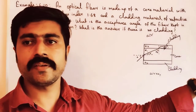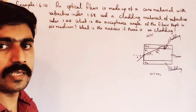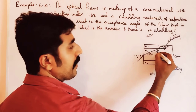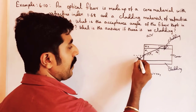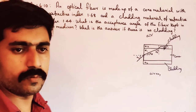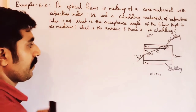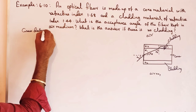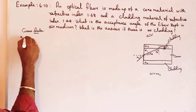The refracted ray grazes the surface of separation between two media. If you look at the acceptance angle, it will be easier. Looking at the given data: core refractive index n1 is equal to 1.68.